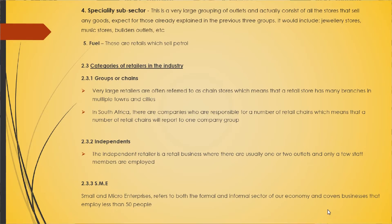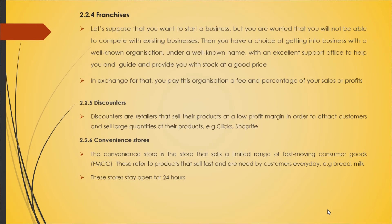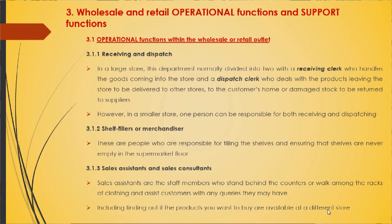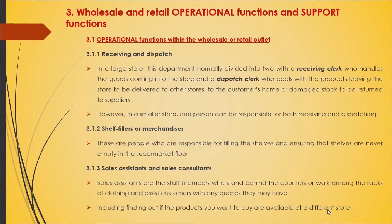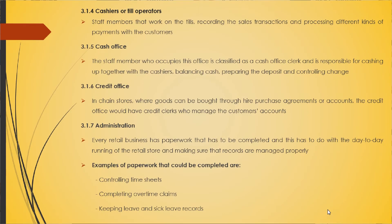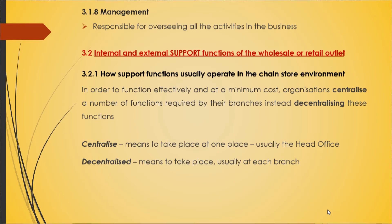We also covered the categories of retailers within the industry: groups or chains, independents, SME, franchises, discounters, and convenience stores. We also looked at wholesale and retail operational and support functions. There are eight different types of operational functions, including receiving and dispatch, shelf fillers or merchandisers, sales assistants and sales consultants, cashiers or till operators, cash office, credit office, administration, and management. In a large store, receiving and dispatch is divided into two roles: the receiving clerk, responsible for handling goods coming into the store such as supplier deliveries, and the dispatch clerk, who deals with products leaving the store.